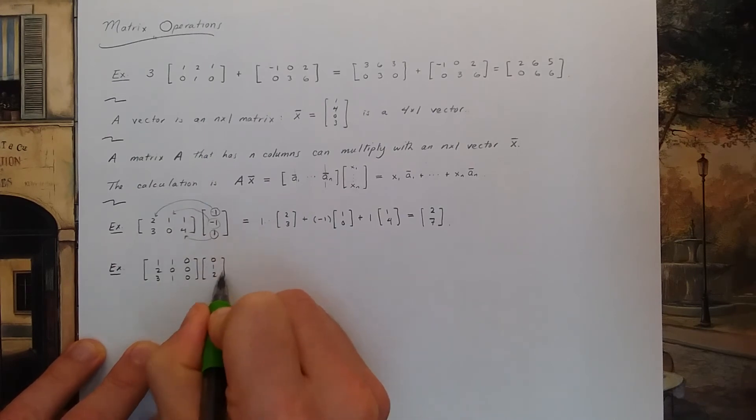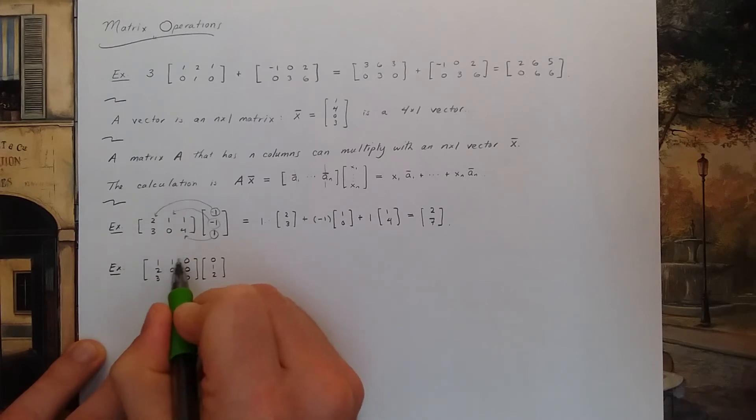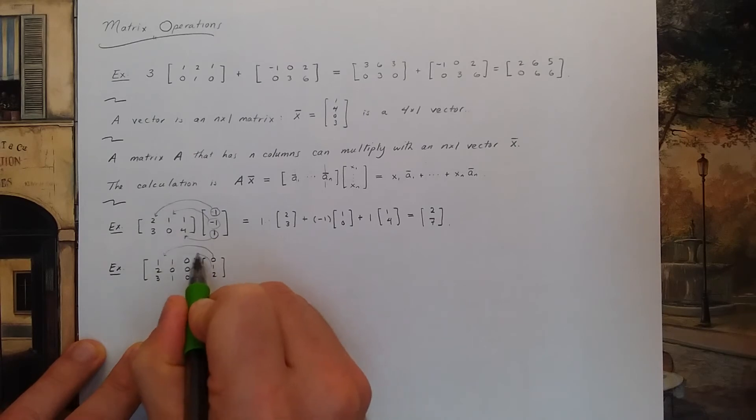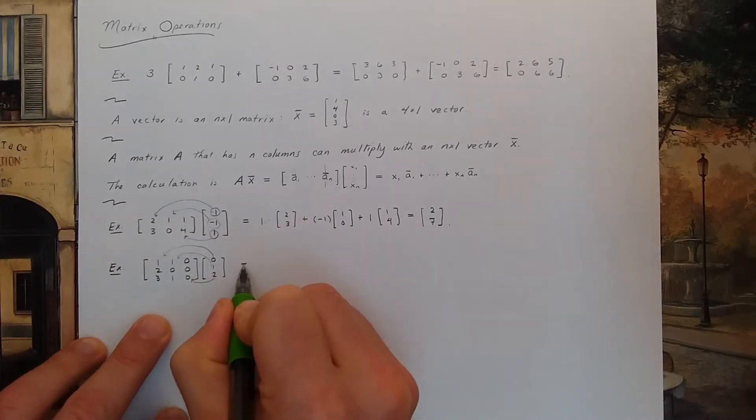So the numbers in this vector, this column, tells you what to multiply the columns of the matrix by. So I'm going to do 0 times this first column, 1 times the second column, and 2 times this third column.